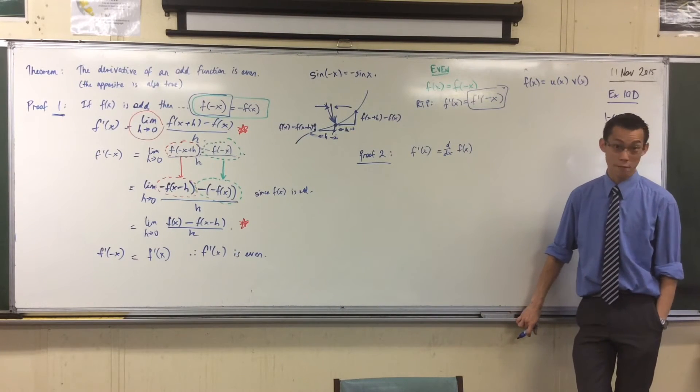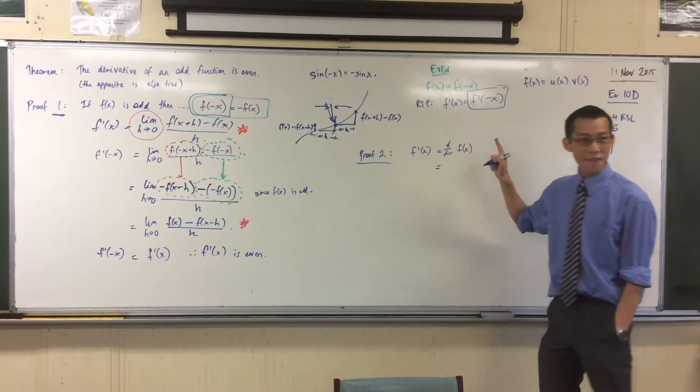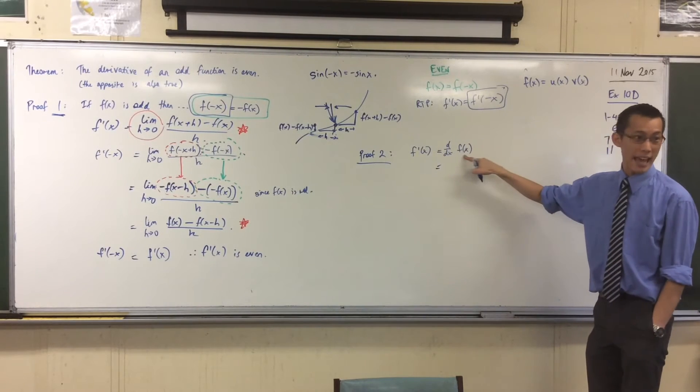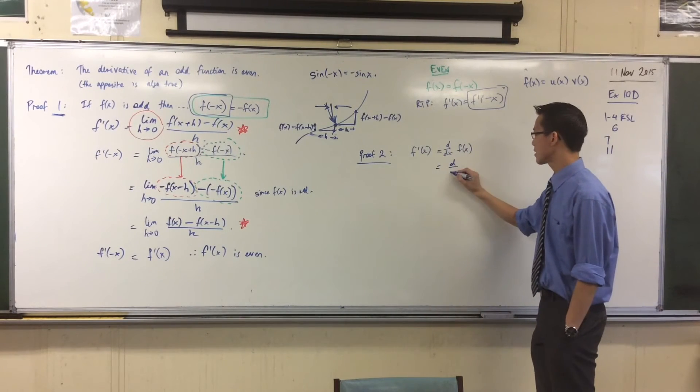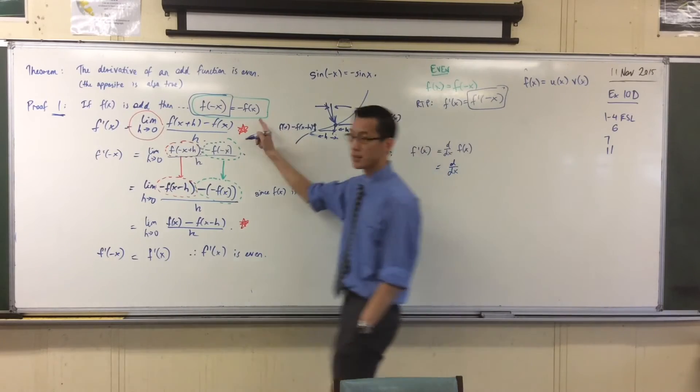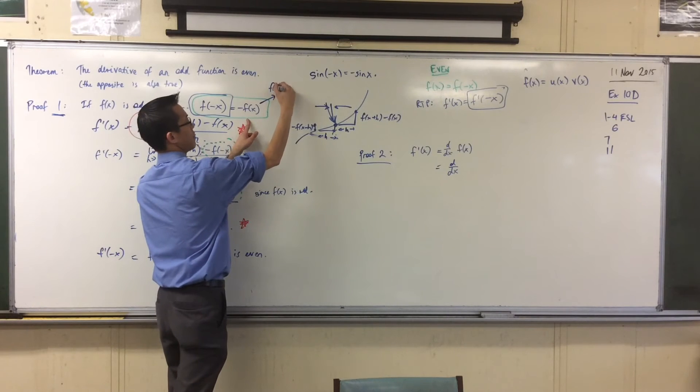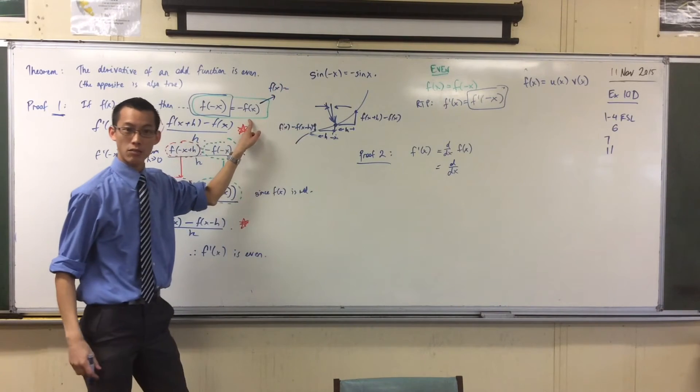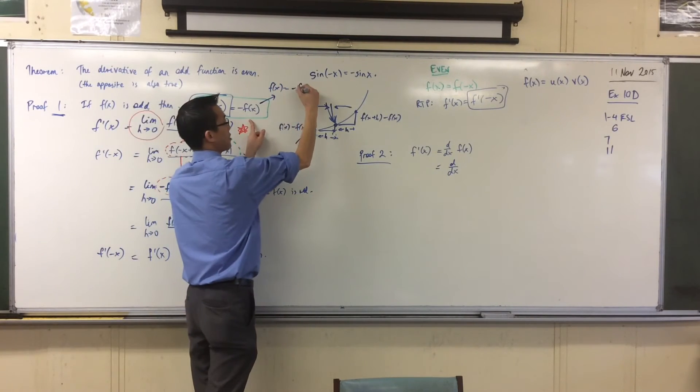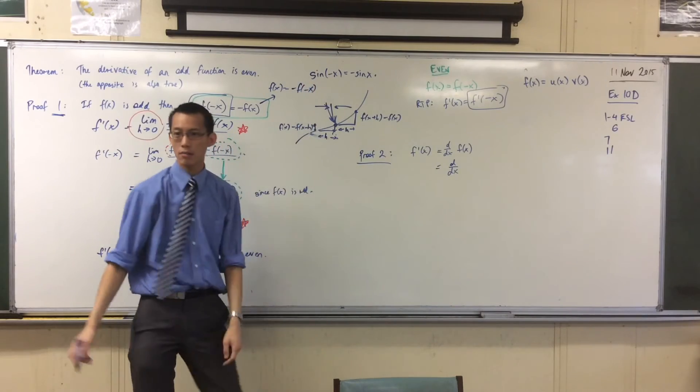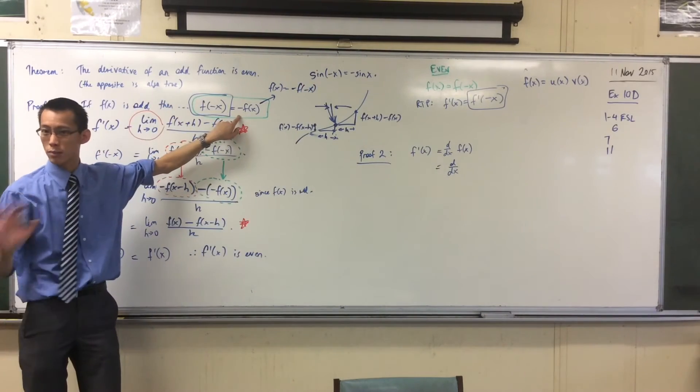But by definition, because f is odd, instead of writing f of x, I can write that. If I come back to this guy over here, f of x here is, if I multiply both sides by negative 1, it's minus f of minus x. Do you agree with that? I just got that straight from here and I multiplied both sides.